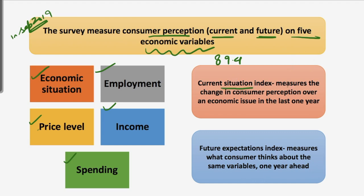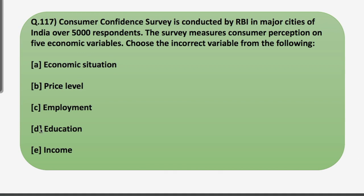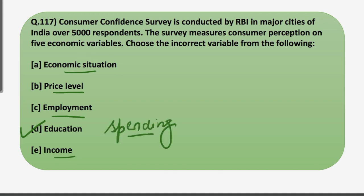The current situation index measures a change in consumer perception over an economic issue in the last one year, and the future expectation index is for one year ahead, surveying on the same variables. Moving back to the question: the correct answer is education, because economic situation, price level, employment, income and spending are the actual economic variables based on which the consumer confidence survey is conducted.